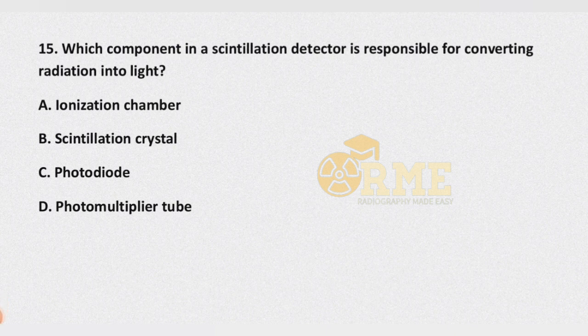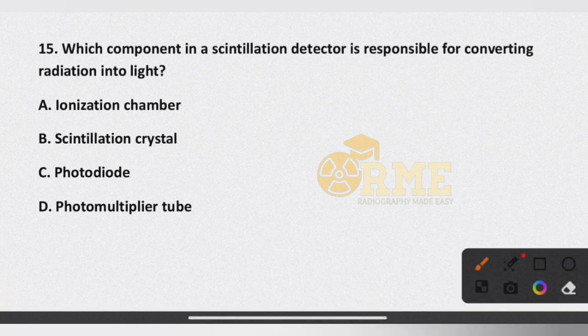Question number 15: which component in a scintillation detector is responsible for converting radiation into light? Options are ionization chamber, scintillation crystal, photodiode, and photomultiplier tube. The correct answer is scintillation crystal, option B.